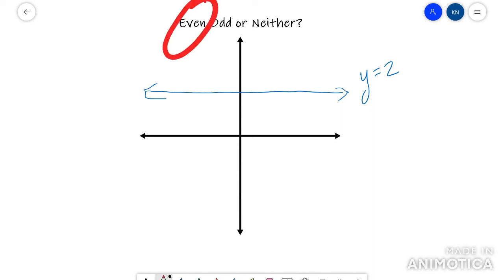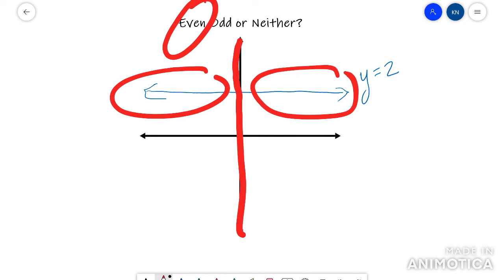Because remember, even has to be symmetric about the y-axis. So the right side mirrors the left side. So if it's just a horizontal line like that, it would be an even function.